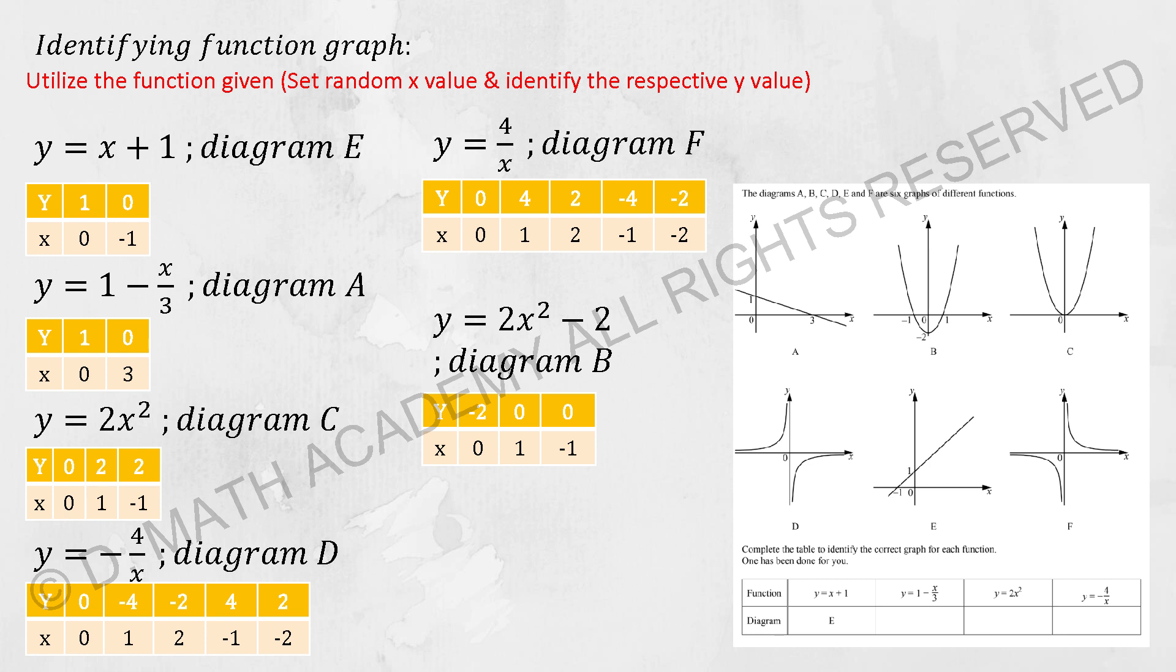Diagram F here will be Y equals 4 over X. For diagram B, it will be 2X squared minus 2. You can actually trace it back using the formula. The negative 2 simply represents the vertical translation, and Y equals 4 over X is actually the other way around of diagram D.